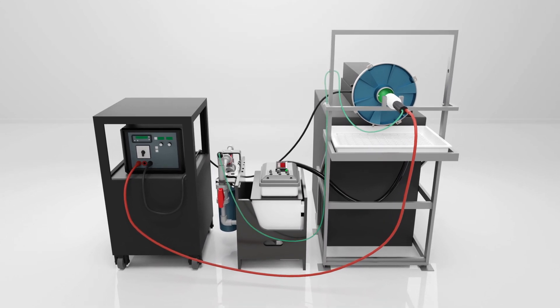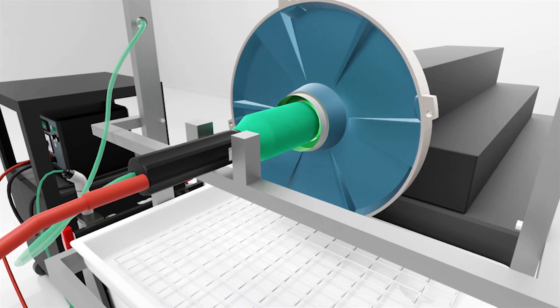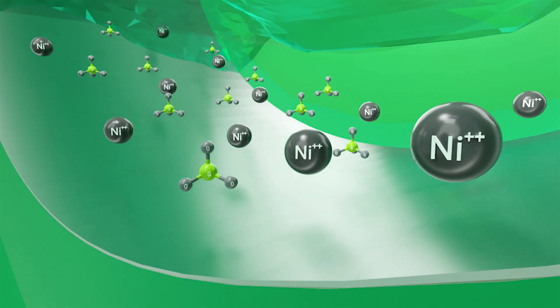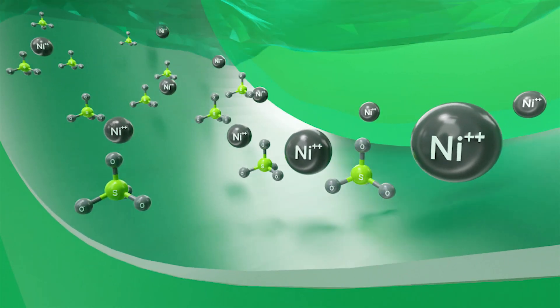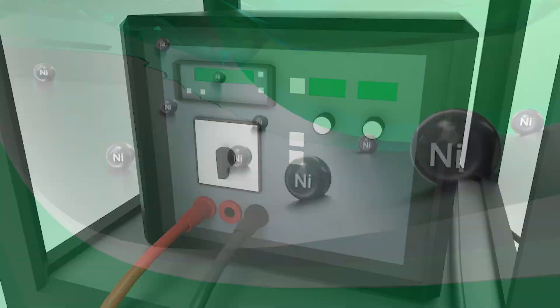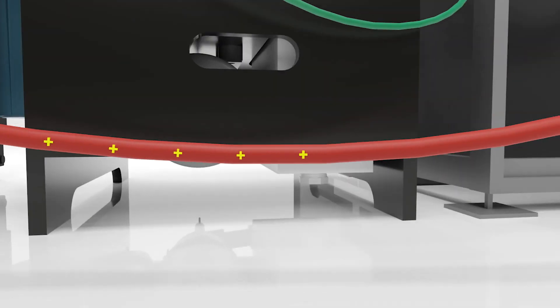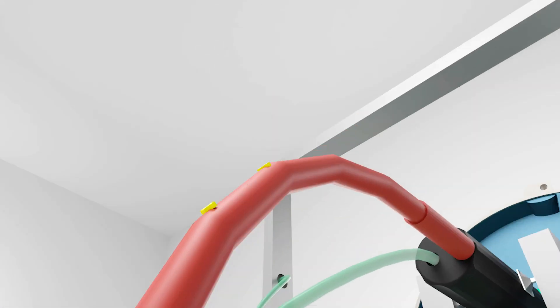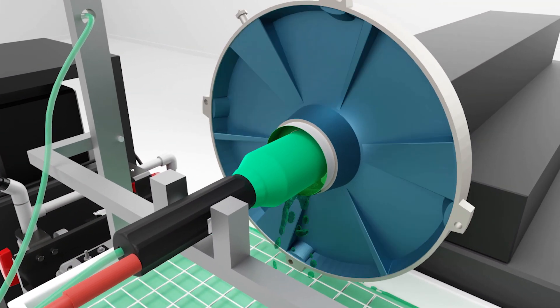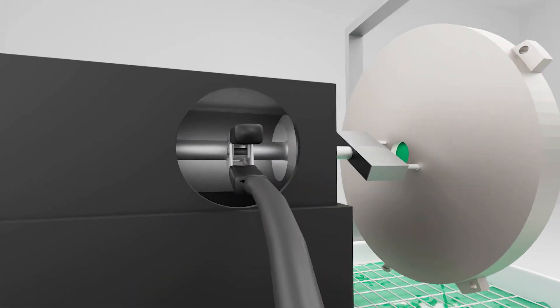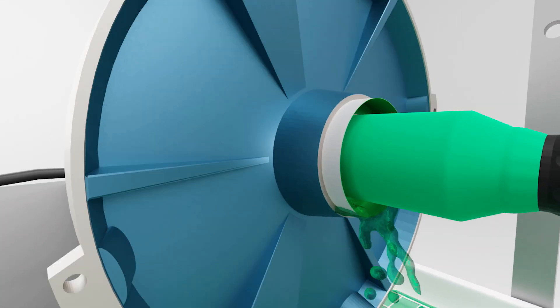Selective plating follows fundamental electrochemical principles. An electrolyte containing metal ions is introduced between the positively charged plating tool and the negatively charged workpiece. A portable power pack or rectifier provides the direct current required for plating, anodizing and electropolishing. The direct current supplied by the power pack is used in a circuit that is completed when the plating tool is touching the work surface.